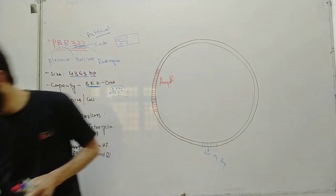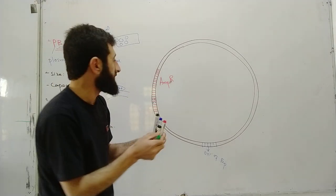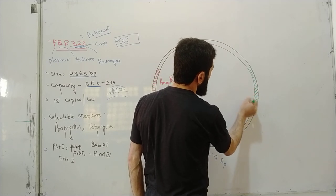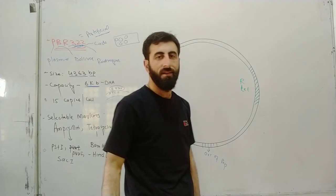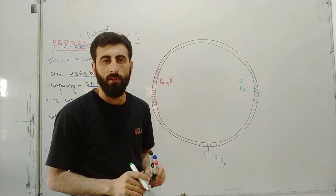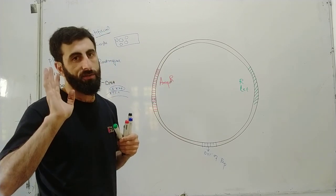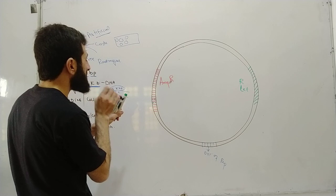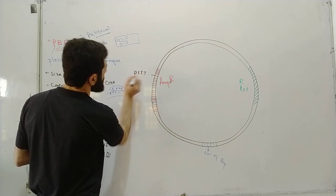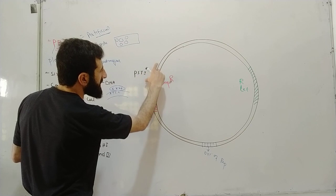PBR322 has two selectable markers: ampicillin resistance and tetracycline resistance genes. When we want to insert DNA into the multiple cloning site, the ampicillin resistance gene contains restriction sites. For example, the PST1 enzyme cuts within the ampicillin resistance gene. So when we insert DNA there, we can identify recombinant clones.